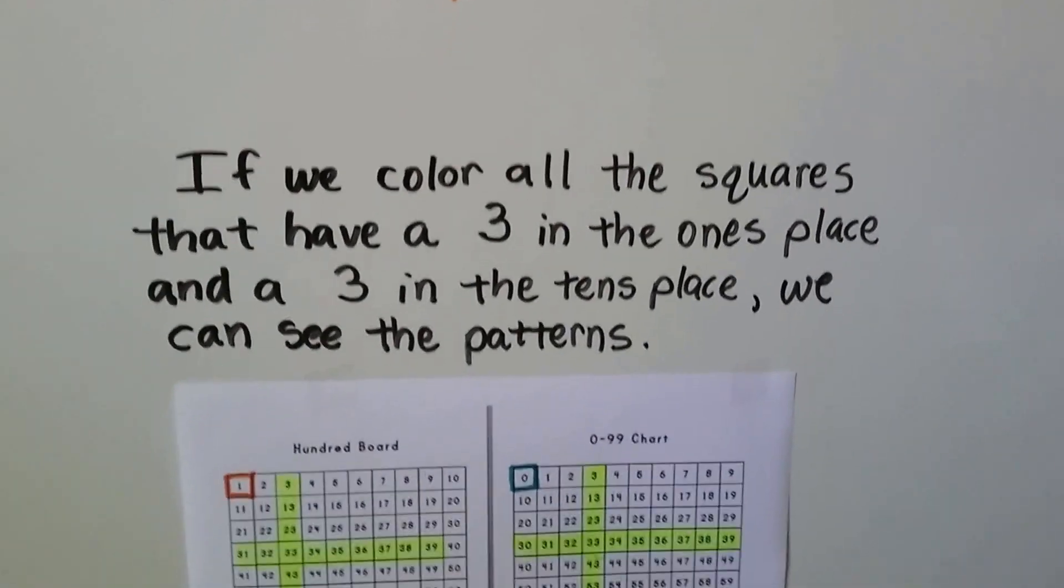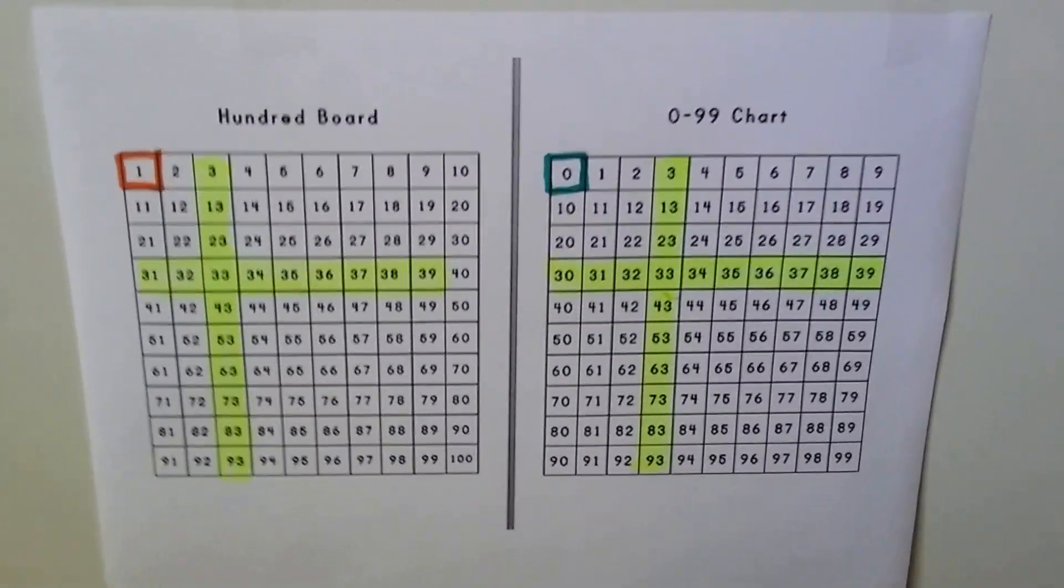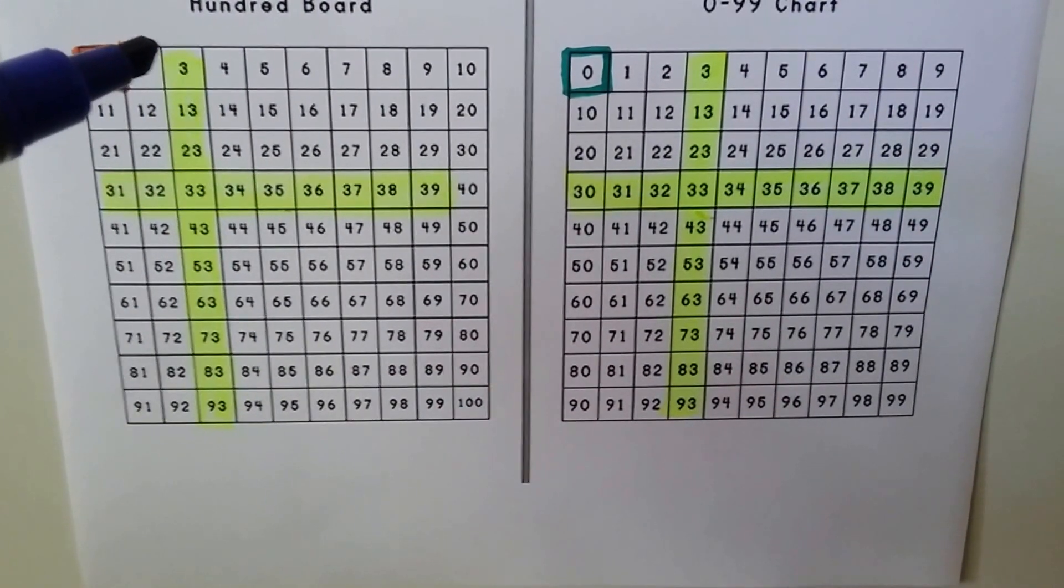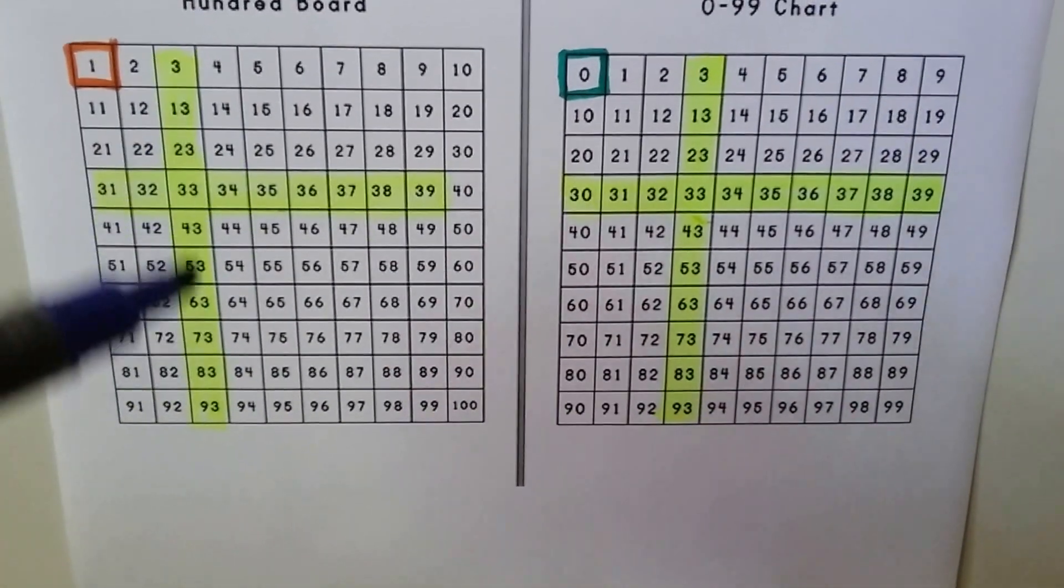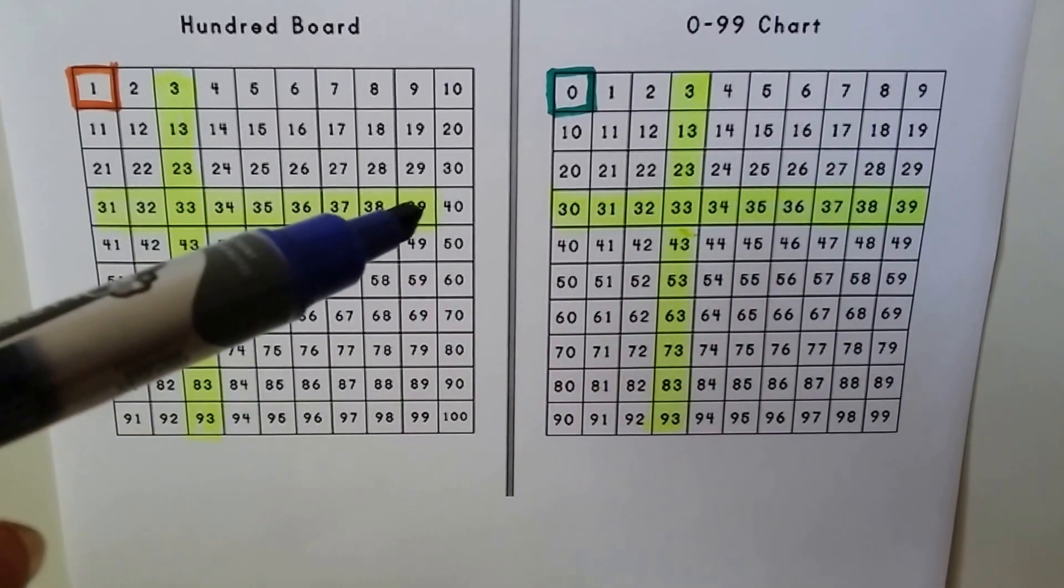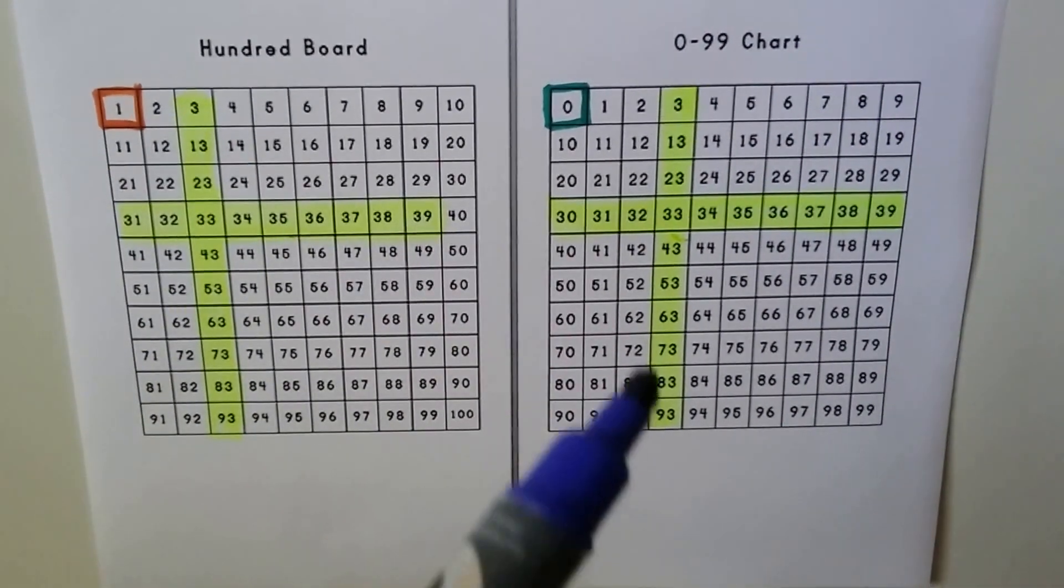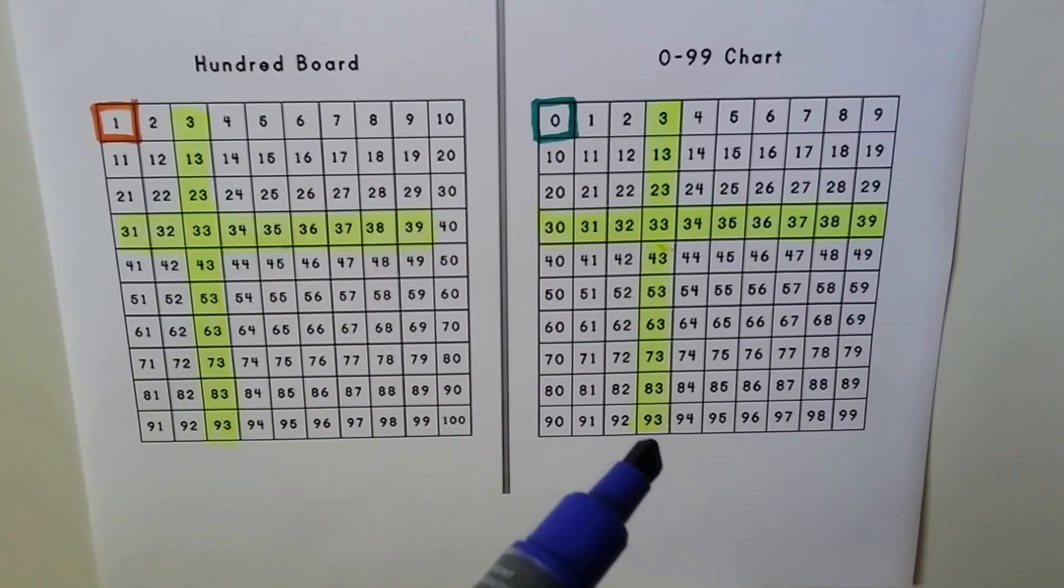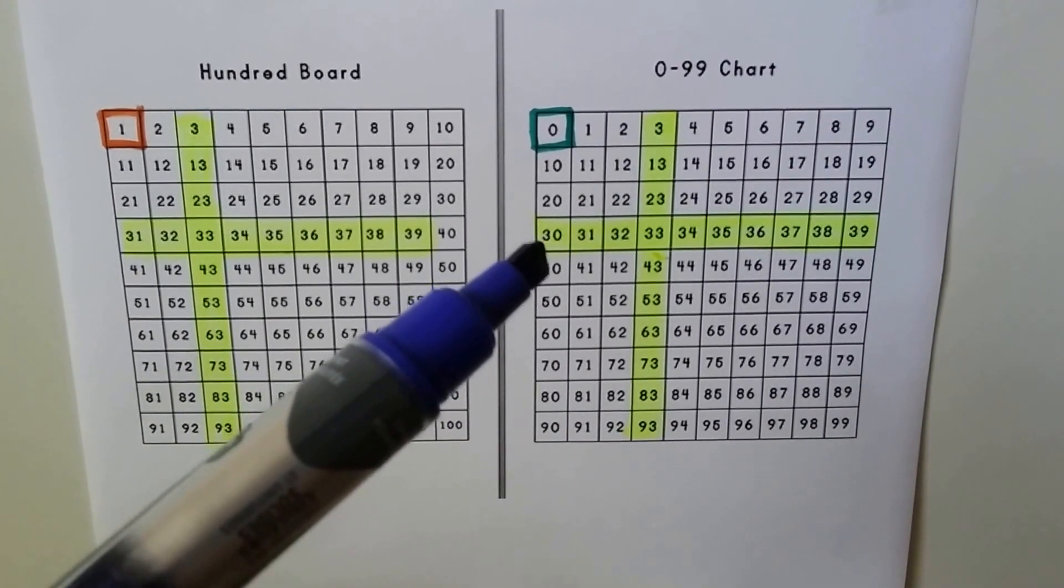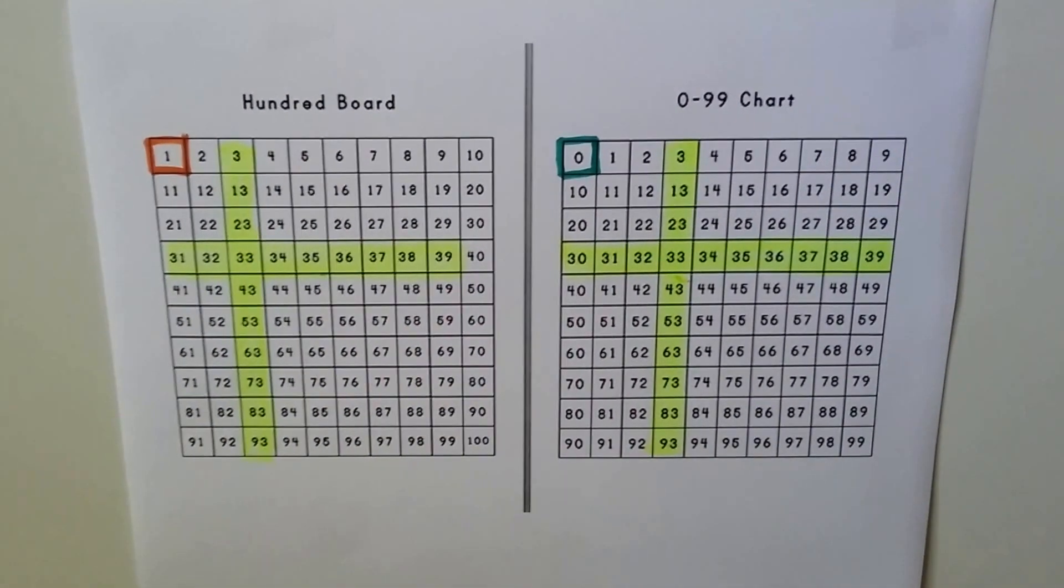If we color all the squares that have a 3 in the ones place and a 3 in the tens place, we can see the patterns. On the 100 board that starts with a 1, if we color all the squares that have a 3 in the ones place, we would color all of these coming down. And if we color all the squares that have a 3 in the tens place, we would go to here and stop, because 40 doesn't have a 3 in the tens place. On the 0 to 99 chart, we would come all the way down with all the squares that have a 3 in the ones place. But when we do the 3 in the tens place, it would go all the way across. Because now 40 is down here in the next line.